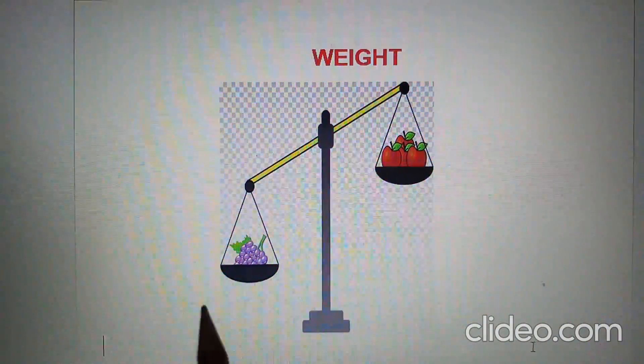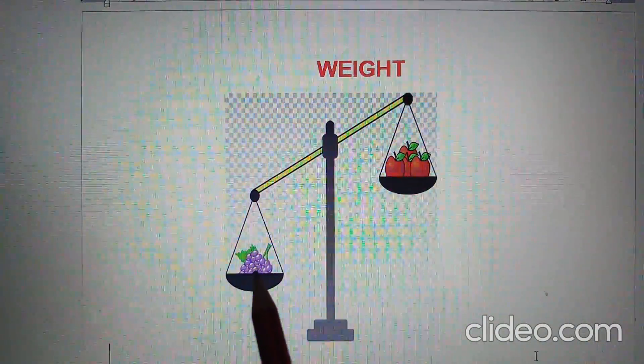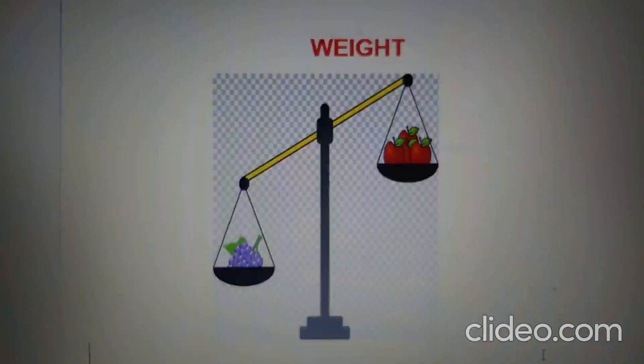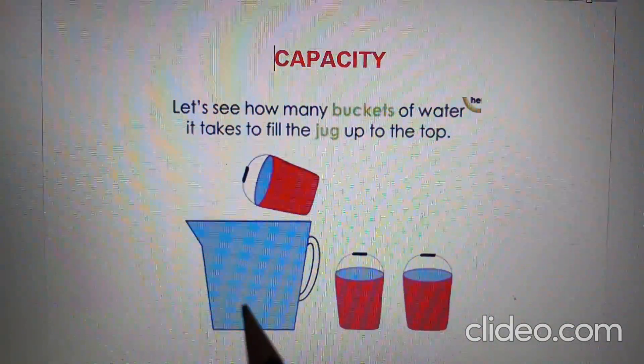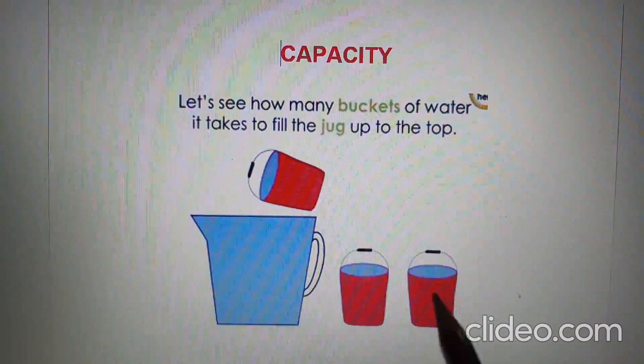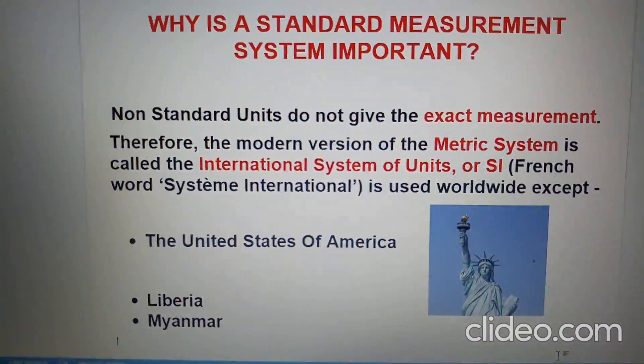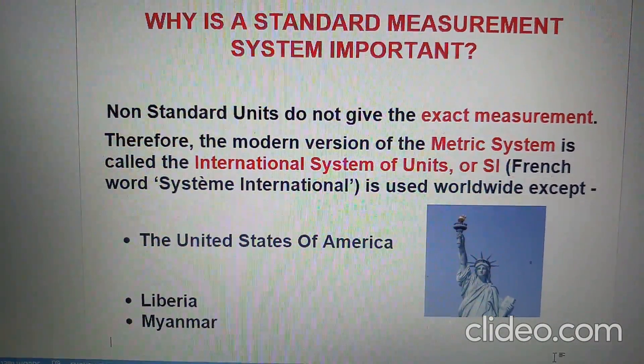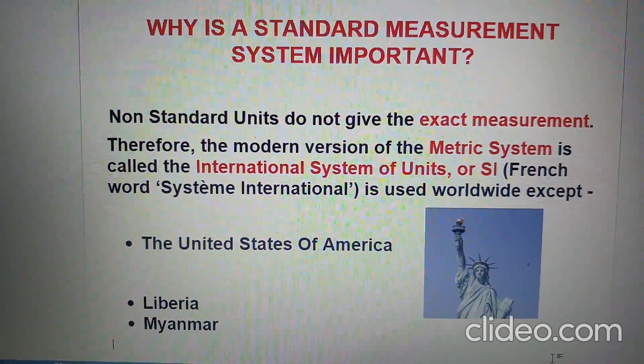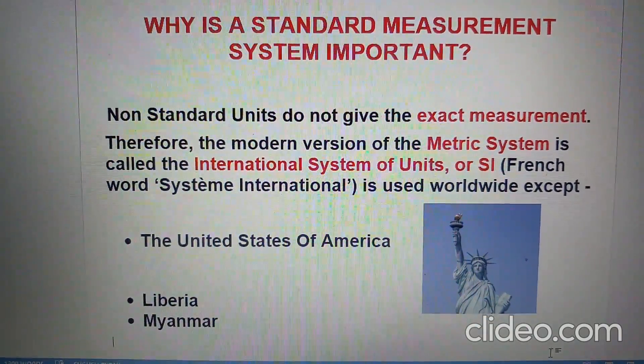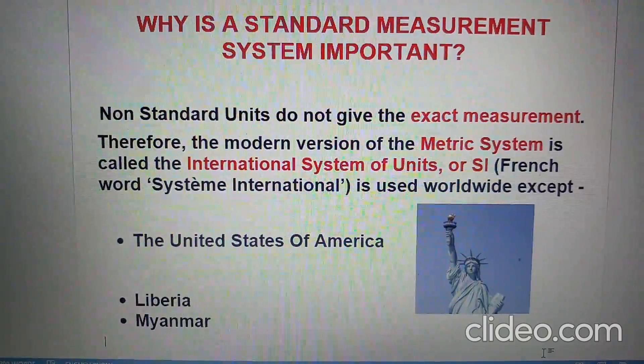To measure weight, an equivalent quantity of two items can be taken. To measure the capacity of a container, small containers of the same size can be used. Non-standard units do not give exact measurements. We cannot use them in our day-to-day life because they differ from place to place, and the size of objects also differs.